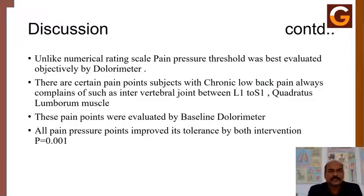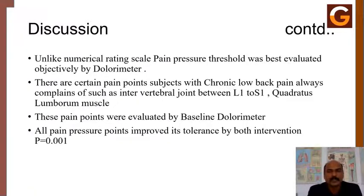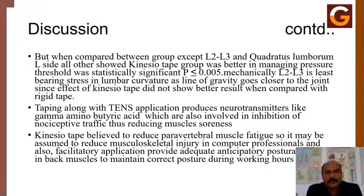Based on the results, the kinesio tape group showed better improvement in almost all pain pressure threshold locations in terms of reducing pain sensitivity. Unlike numerical rating scales, pain pressure threshold is best evaluated objectively by the algometer. Subjects with chronic low back pain consistently show pain sensitivity at interspinous processes between L1 and S1 and at the quadratus lumborum. The study found a significant difference favoring kinesio tape over rigid tape, except at L2–L3 and quadratus lumborum left side, where p was greater than 0.05.